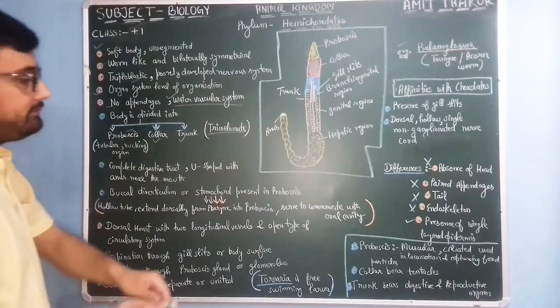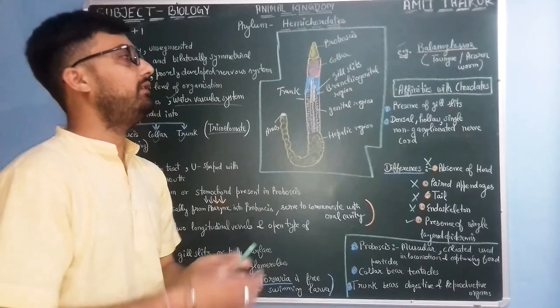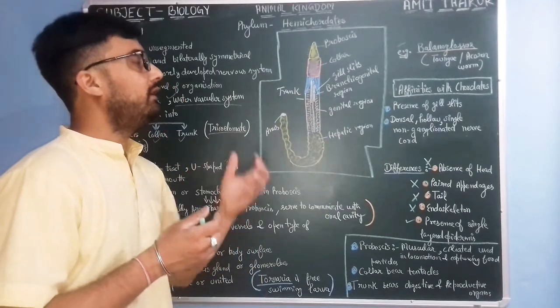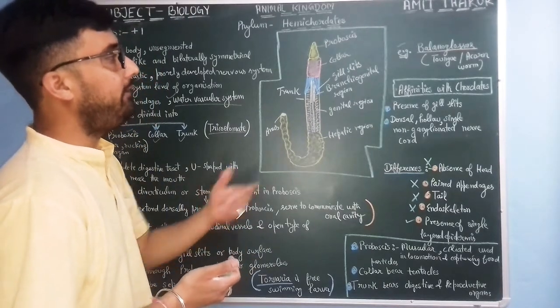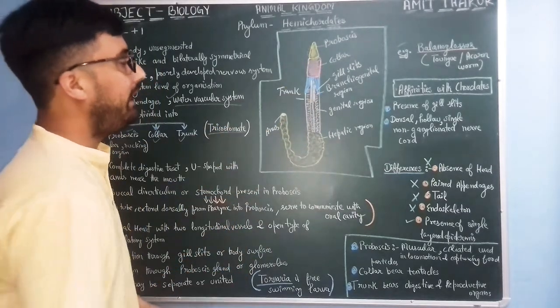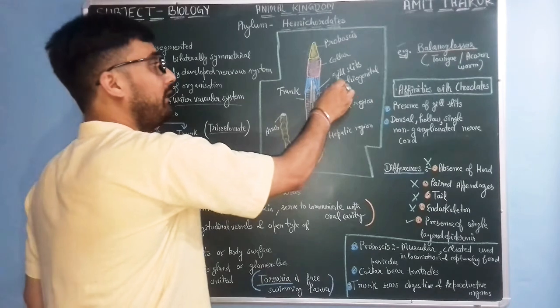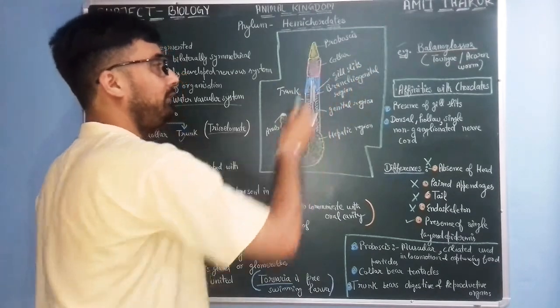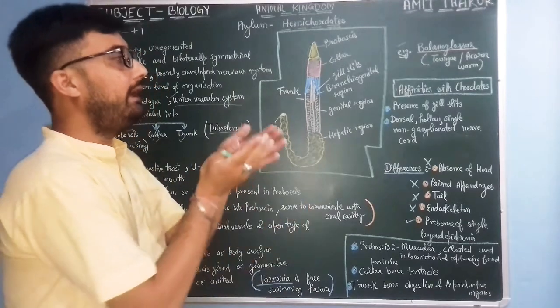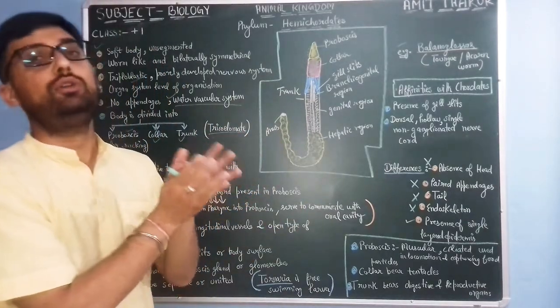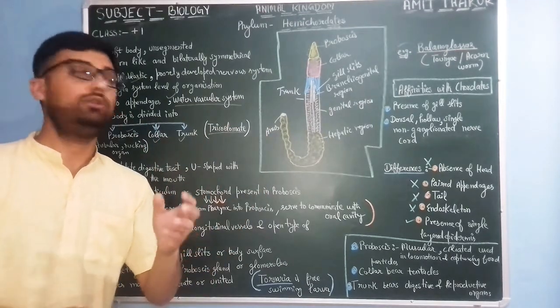The collar region bears tentacles, meaning it has function in the sensory system. The sensory system is derived from this collar region and trunk region. This trunk region has gill slits, which are characteristic features of chordates. There are some features similar to chordates and some similar to non-chordates, which is why it is a connecting link.